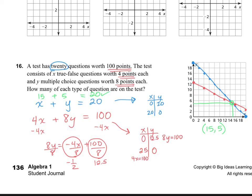So now I'm going to plug it into the second equation. So we have 4 multiplied by 15 plus 8 multiplied by 5 equals 100. And guess what? That actually does work as well.